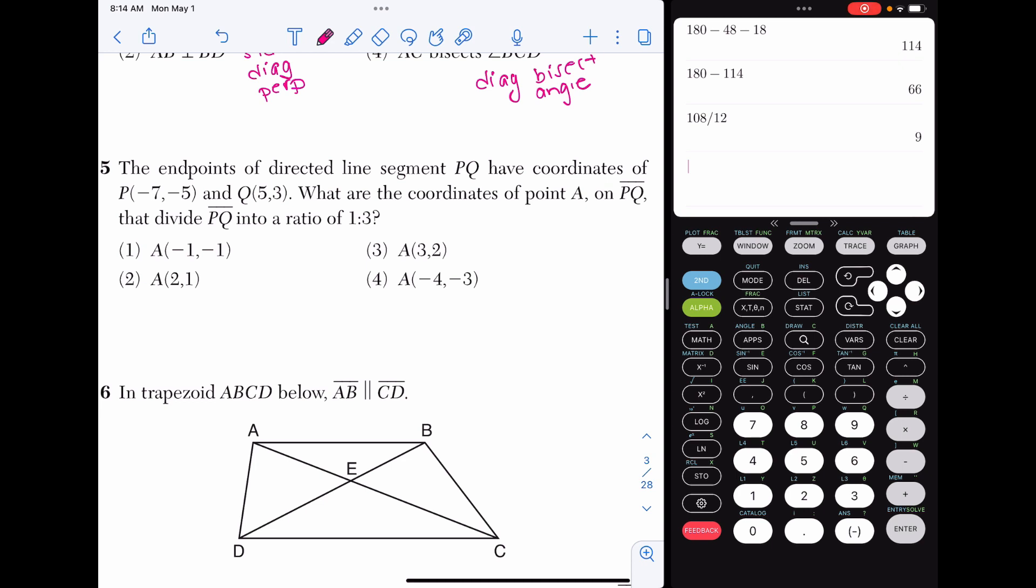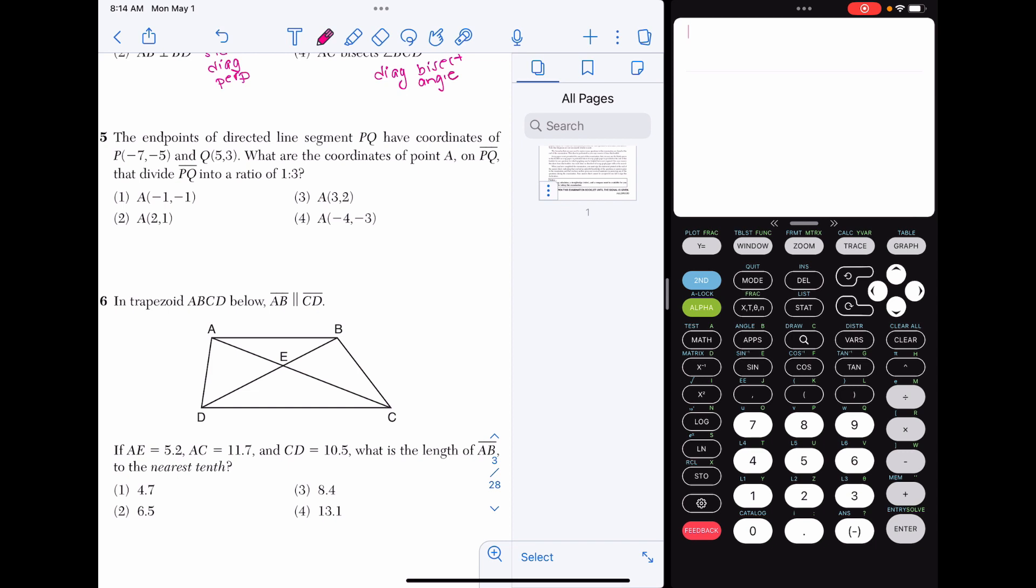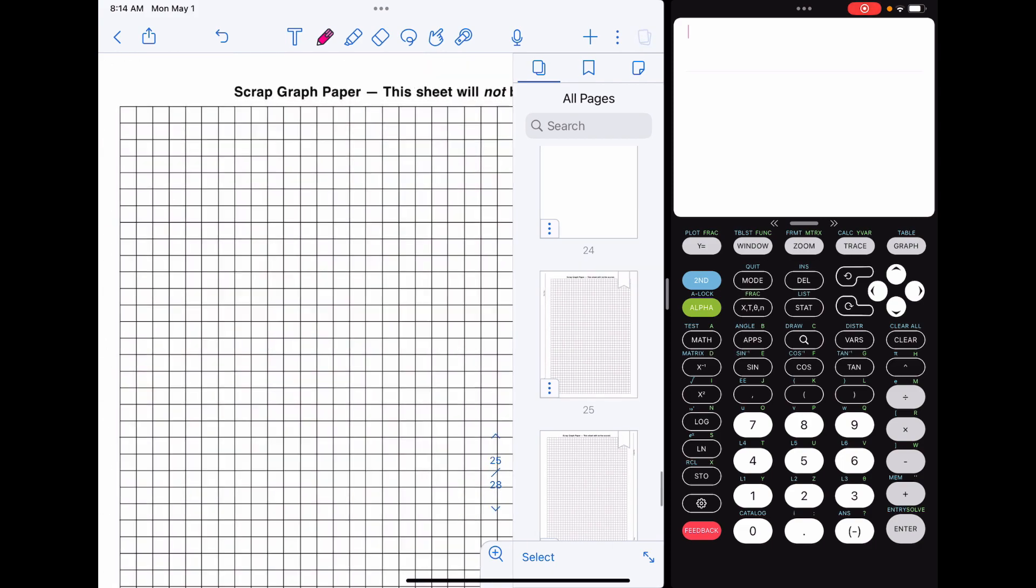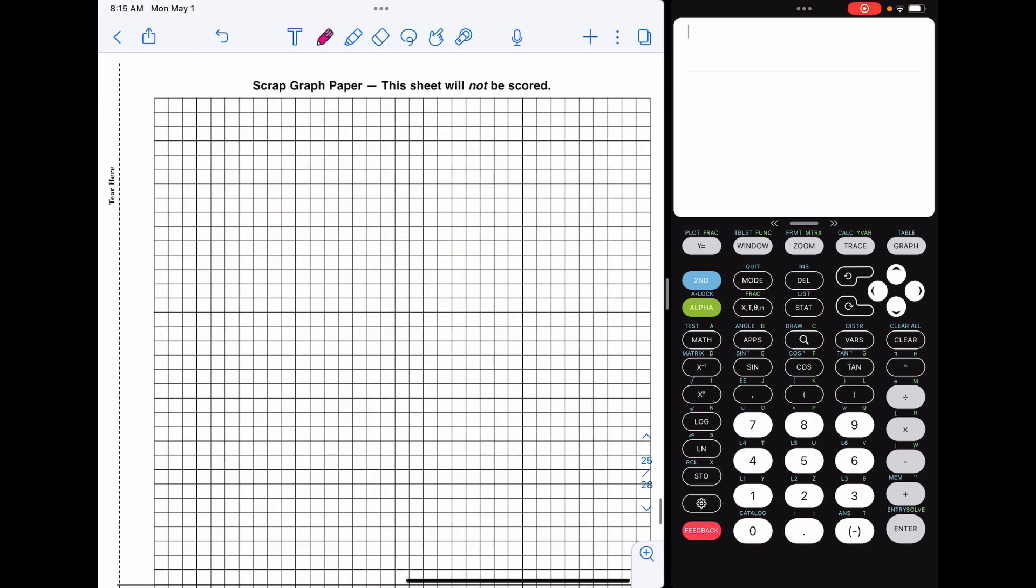Number five, the endpoints of directed line segment PQ have these coordinates. We want to partition it into a one-to-three ratio. This is one of my favorite Regents questions because it's like a giveaway. I would suggest doing these graphically. So I have our two coordinates here: negative seven, negative five, and five, three. We want a one-to-three ratio. What I would do is in your Regents exam booklet, go to the back and find the scrap graph paper. Once you have that, use your straight edge to draw axes.